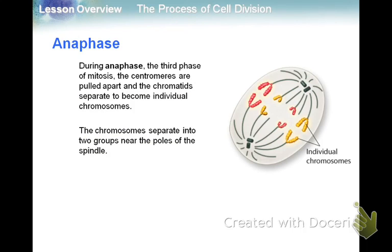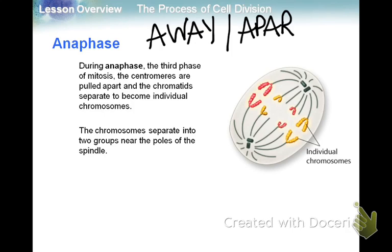Anaphase — key word: 'away' or 'apart.' The sister chromatids are separated — the centromeres are pulled apart, and the chromatids become individual chromosomes. They separate into two groups near the poles of the spindle, at opposite ends of the cell.